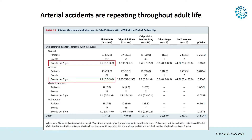Arterial accidents will repeat throughout life. A table from one of our recent publications shows the overall event rate in a cohort of 144 patients followed for over 20 years, with an overall event rate of 1.6 events per five years, and arterial events at 1.3. So it's not that common in an overall patient cohort.